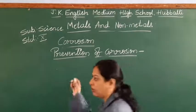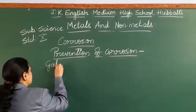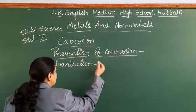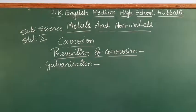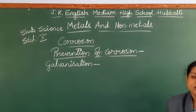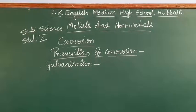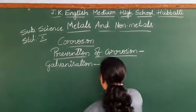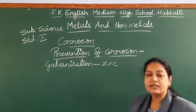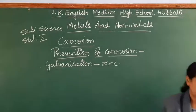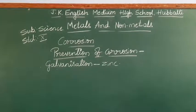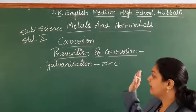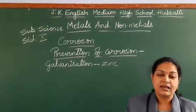Let us take the example of galvanization. What happens in galvanization? It is one method to protect steel and iron from rusting. In this method, they apply a zinc coating on the surface of the metal — like iron or steel — so that it can be protected. That is called galvanization.